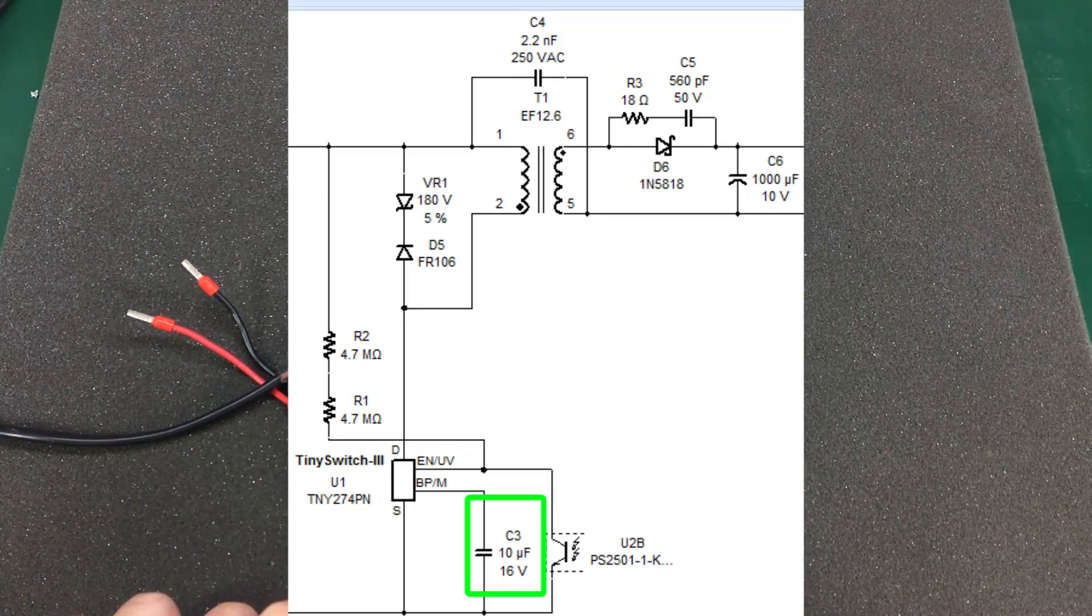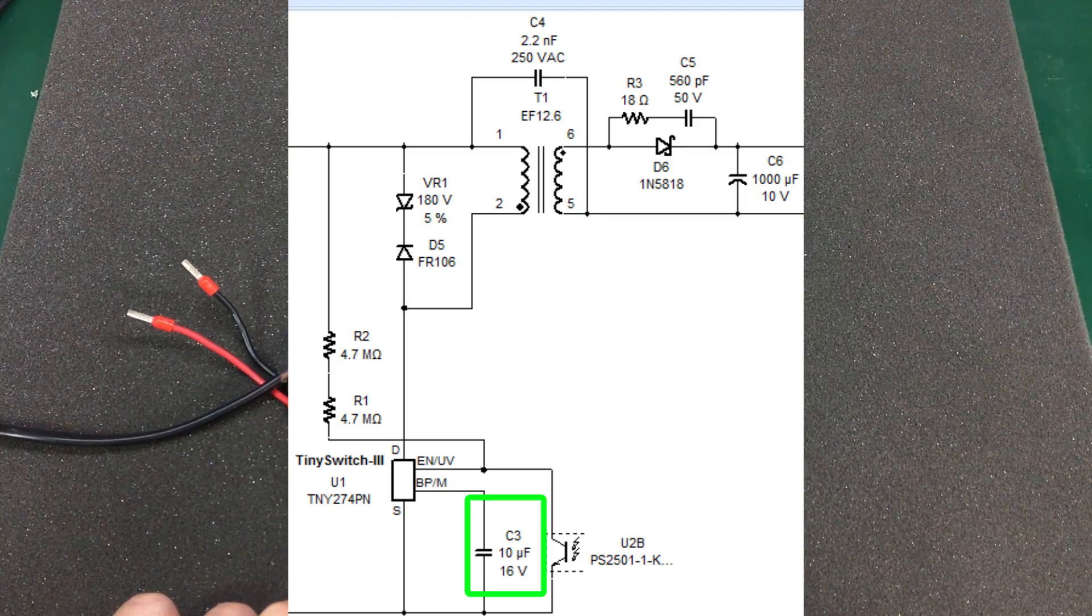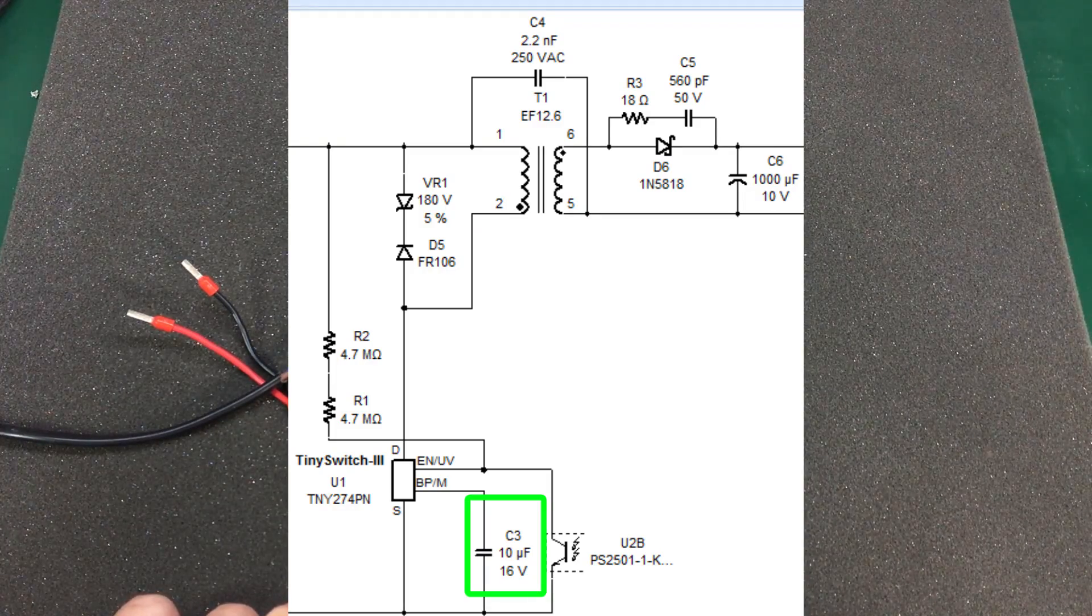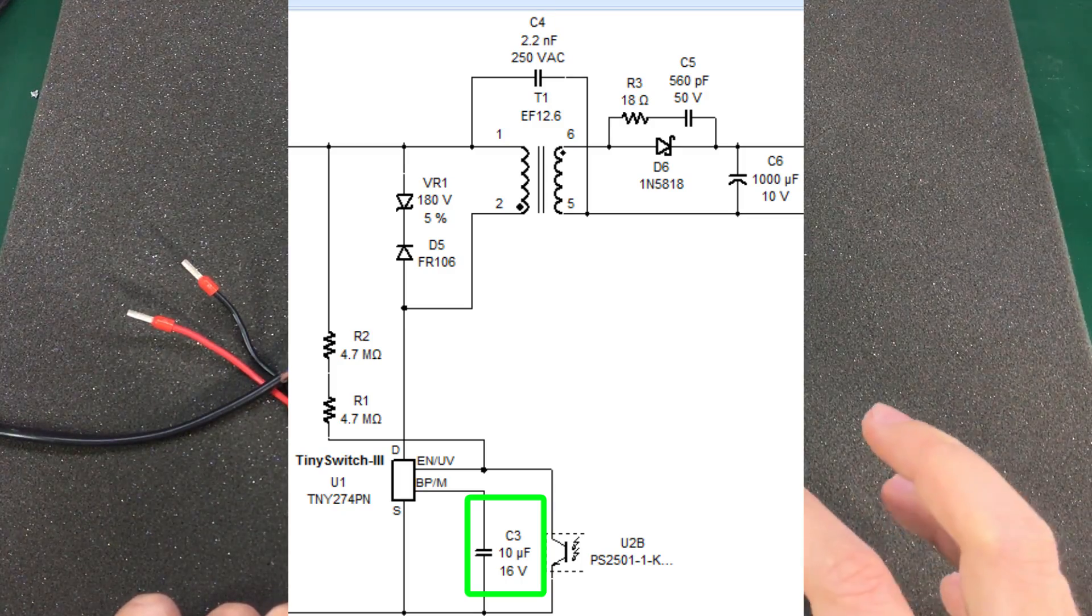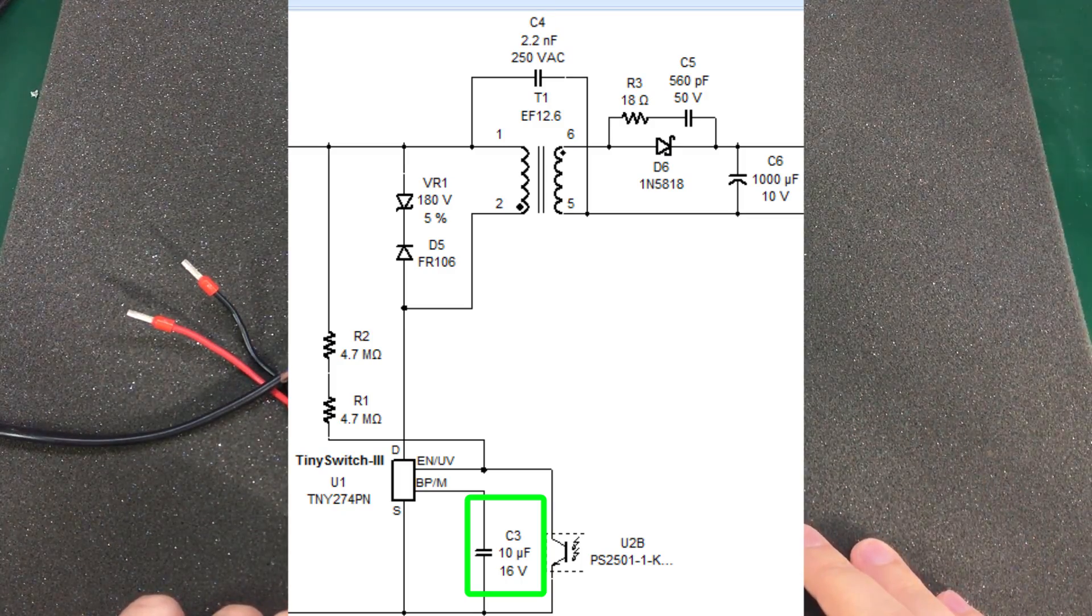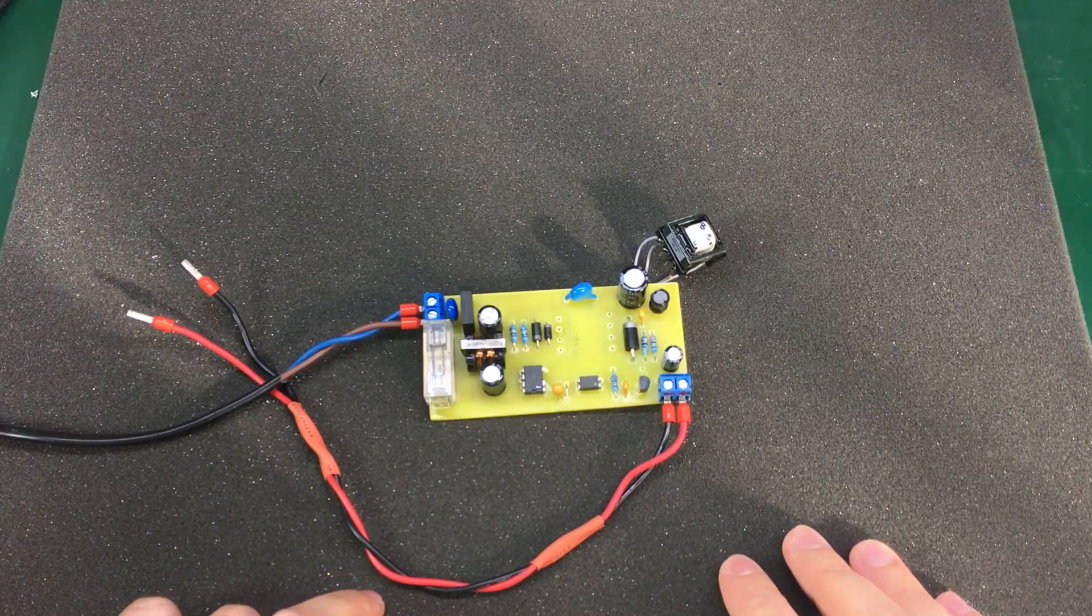So I also increased the bypass capacitor to 10uF because according to the datasheet that would increase the current limit. But that didn't make any change to the behavior of the circuit, it was still going into thermal protection.